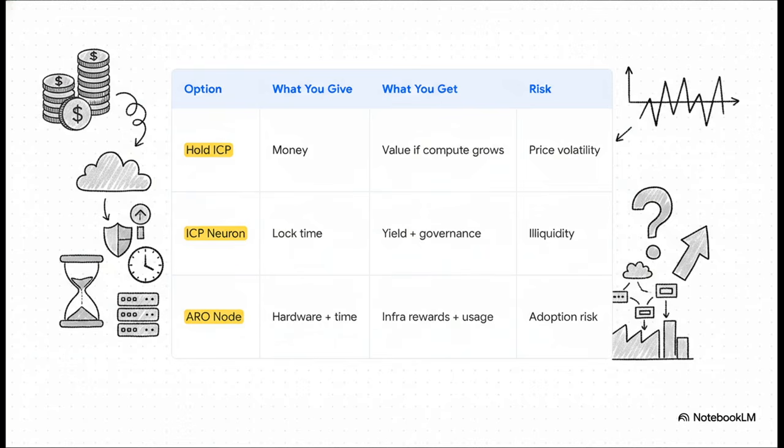Let's walk through it. If you just hold ICP, you're putting in money and what you get is potential value if the whole thing grows, but your main risk is just price volatility. As a neuron holder, you give up your time by locking your tokens, but you get yield and governance power. But the risk is you can't touch your funds. And then, as an ARO node provider, you give your hardware and your time, and in return you get rewards from actual usage. The big risk there? Well, it's adoption risk. What if nobody uses the roads?